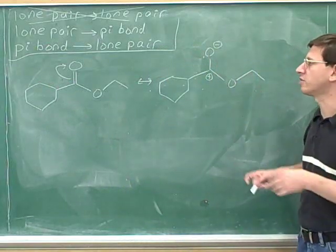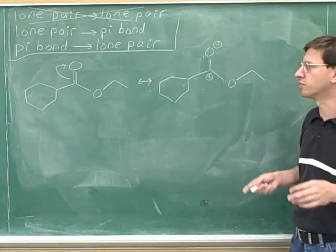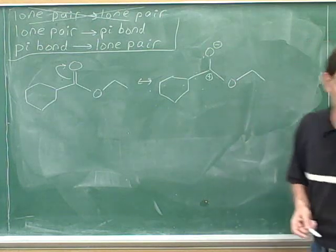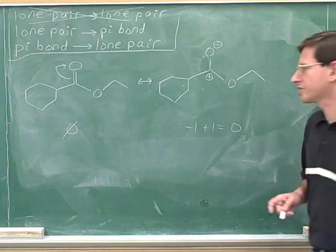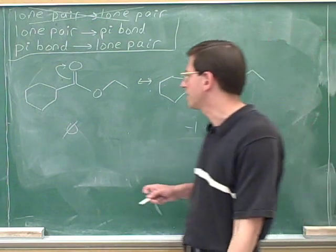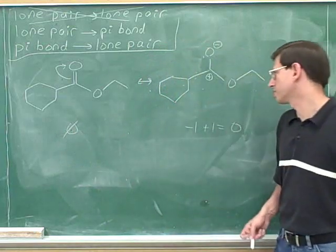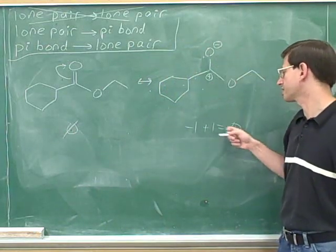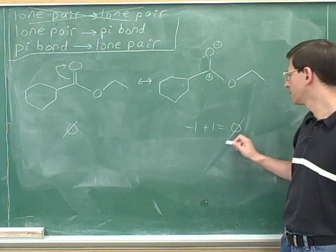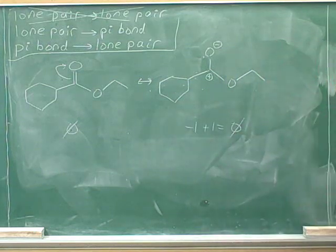Even though we could draw more resonance structures, we're not going to do that right now. We're still working on very basic problems. Let's check the net charges. The net charge on the left was zero, and on the right-hand structure we have a negative one charge and a positive one charge, so the net charge is zero here as well. That confirms we got the structures correct.